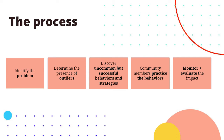Once you've identified that problem, you then determine the presence of outliers. Looking at data, where are those people on the positive end of the spectrum who, given no additional resources, found a way to be more successful than their peers? Once you identify those outliers, you discover those uncommon but successful behaviors and strategies. What are they actually doing? What are they saying, and how are they acting in their own lives that enabled them to be these positive deviants?